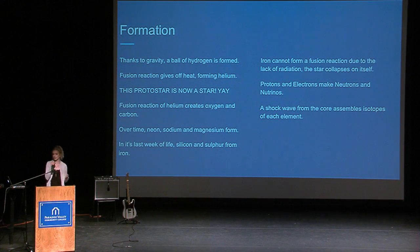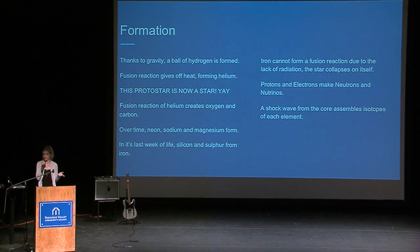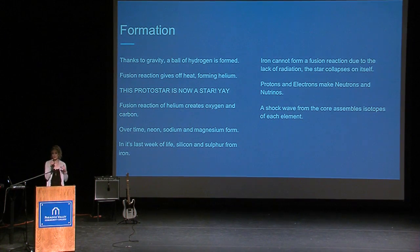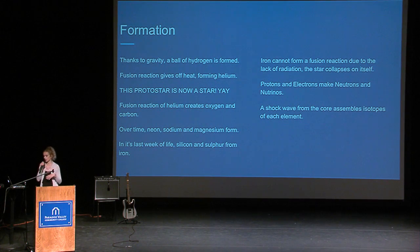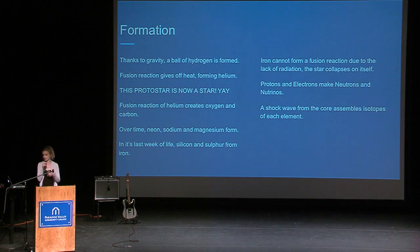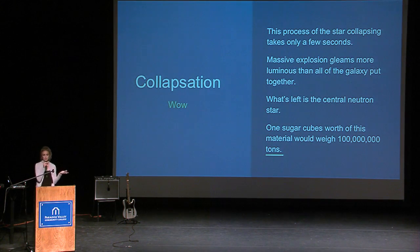The fusion reaction of helium then creates oxygen and carbon. Over time, neon, sodium, and magnesium form, and then silicon and sulfur. Within the last week of its life, silicon and sulfur then make iron. But because there is a lack of radiation, iron cannot form a fusion reaction — therefore there is no force pushing out, and gravity is still pushing in, so the star collapses on itself. During this time, in the core of the star, protons and electrons are forced together to make neutrons, a shock wave from the core assembles isotopes of each element of the star, and a supernova happens.